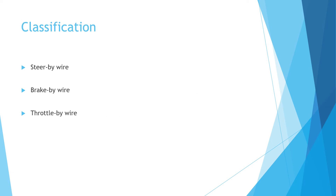Now coming to the classification of this X-by-Wire technology. Basically, this X-by-Wire technology is classified in three ways: number one is steer-by-wire, number two is brake-by-wire, and number three is throttle-by-wire. Let's start with steer-by-wire.